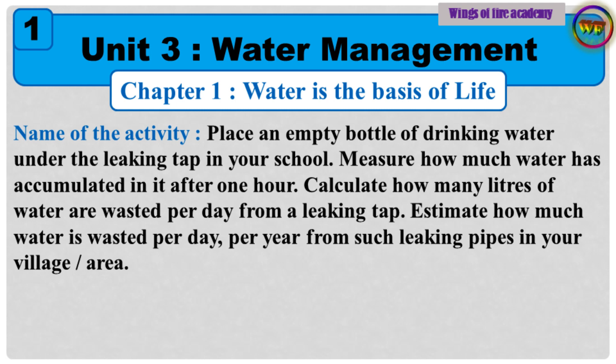Name of the activity: Place an empty bottle of drinking water under the leaking tap in your school. Measure how much water has accumulated in it after 1 hour. Calculate how many liters of water are wasted per day from a leaking tap. Estimate how much water is wasted per day and per year from such leaking pipes in your village or area.